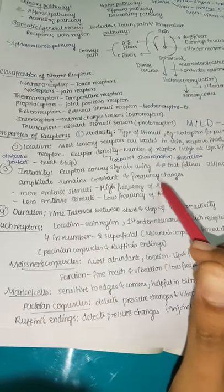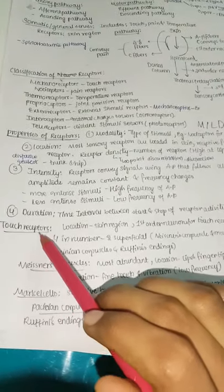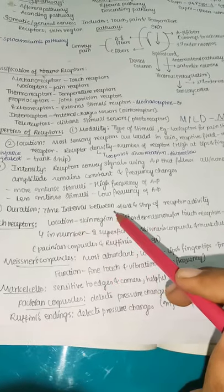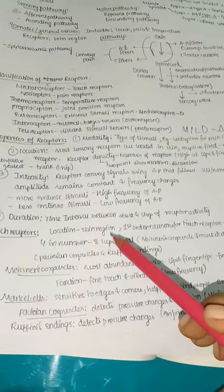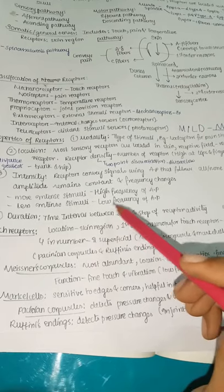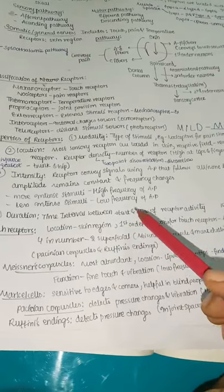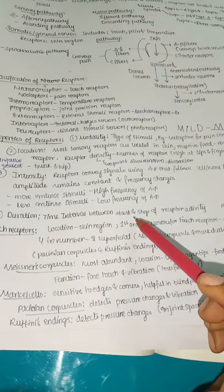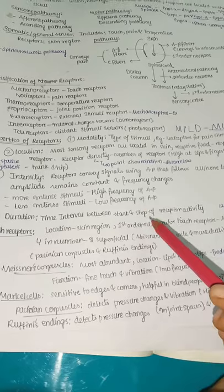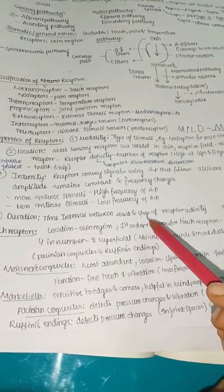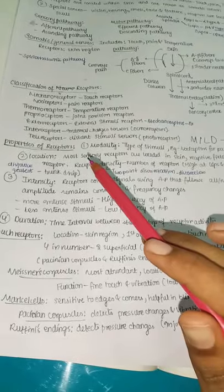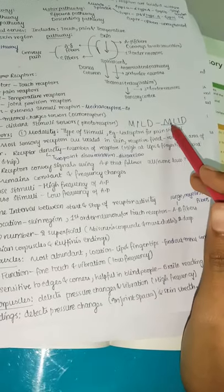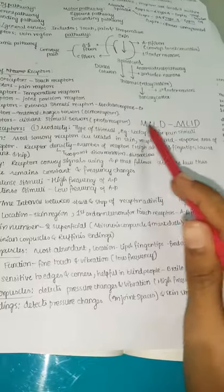Duration: the time interval between the start and stop of receptor activity. If the stimulus is present, the receptor starts; when the stimulus is gone, the receptor stops. This interval is called duration. These are the main properties of receptors remembered as MLID.